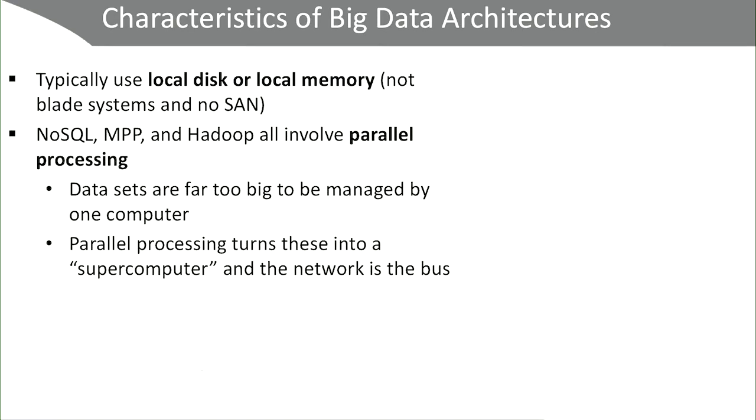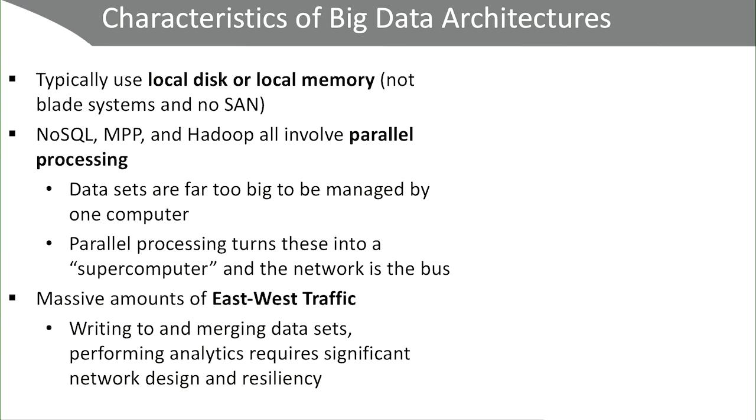Another commonality between NoSQL, MPP, and Hadoop is that they all involve an element of parallel processing. These data sets are just too big to be managed by one computer, so parallel processing allows you to distribute the load and create almost a supercomputer by networking all these computers together — that network is like the bus of that supercomputer. Most big data management systems also see a tremendous amount of east-west traffic, meaning the nodes communicate with each other, passing information back and forth for merging data sets, moving data, and replicating data. This implies a very high-capacity network is required.